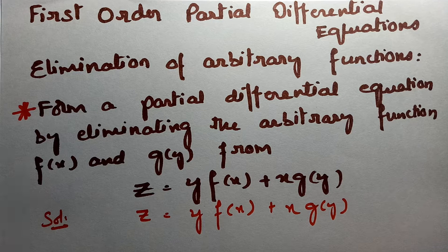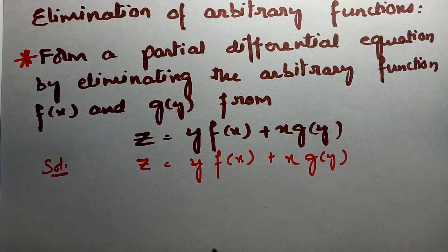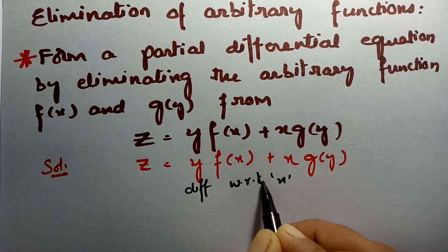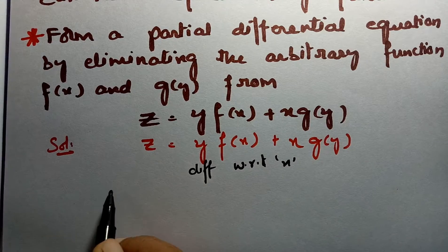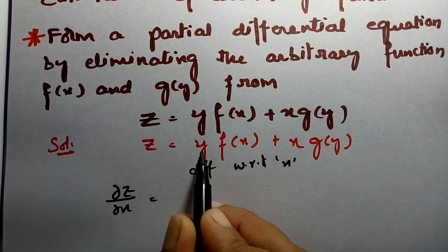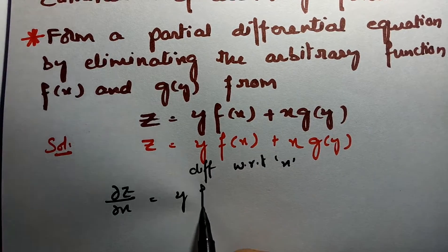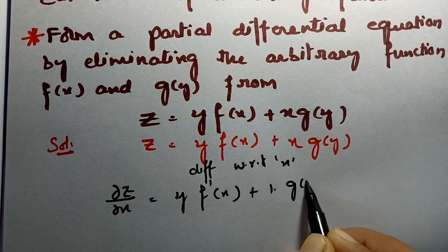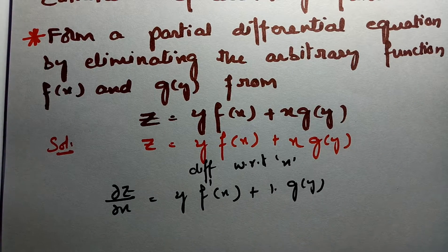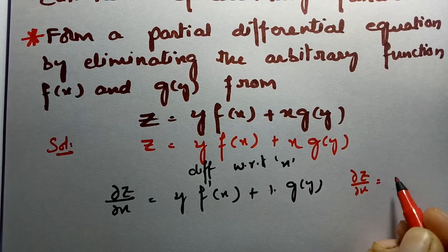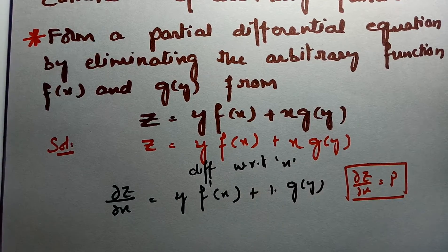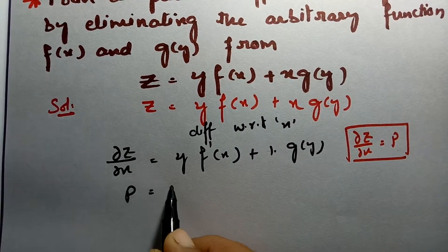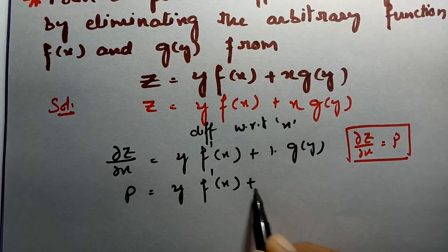First, we have to differentiate with respect to x. If we differentiate with respect to x, we have to treat y as a constant. Then it will be ∂z/∂x = y·f'(x) + g(y). As you all know that ∂z/∂x can be written as p. So in place of ∂z/∂x, if I write p, then it will be p = y·f'(x) + g(y).